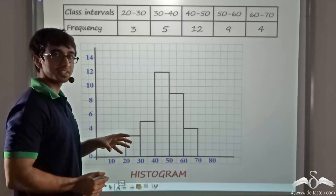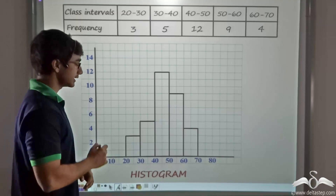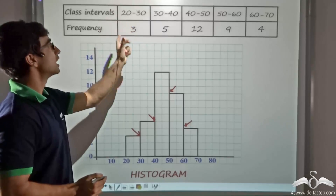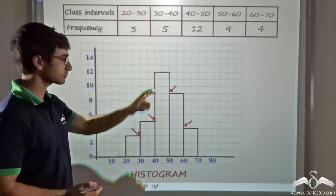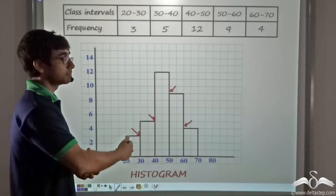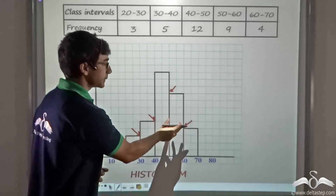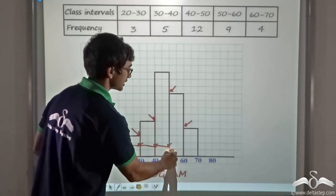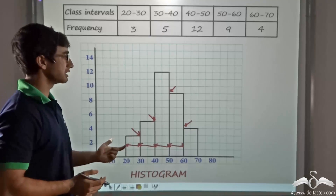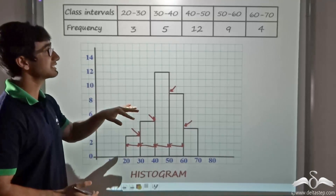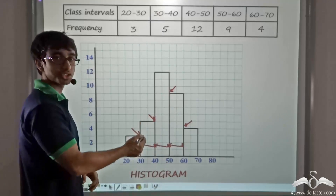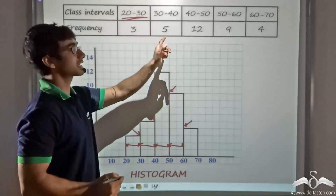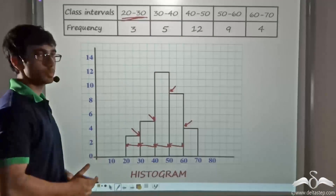Now if you observe closely, there are certain differences from a normal bar graph. The first difference is there is no spacing between consecutive bars, because we have a continuous distribution of data. If there were spacing, it would imply the classes are not continuous, which is wrong for a histogram. Furthermore, the width of each bar remains the same — unlike a bar graph where this is merely aesthetic, in a histogram it has physical significance, because the width represents the class width. Since the class width is the same for all classes, it is imperative to keep the width equal.